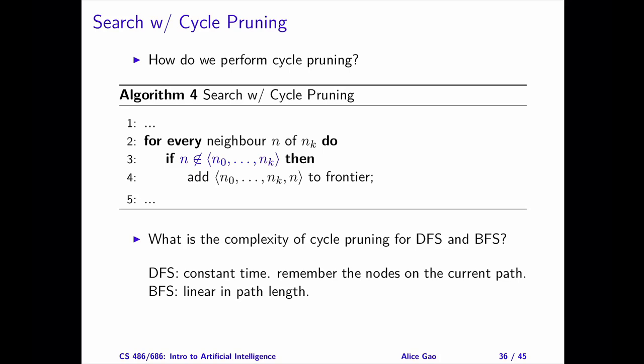However, for depth first search, we can do better. DFS only remembers one path at a time. We can store all the nodes on the current path in a hash map. Then, checking whether a node is in the hash map requires constant time.